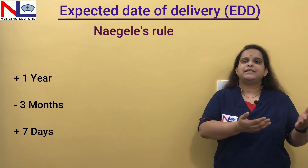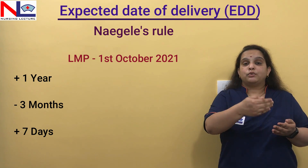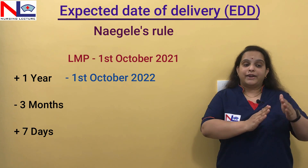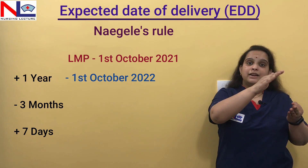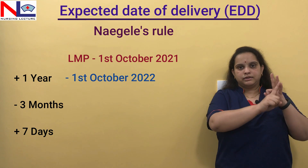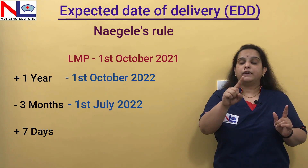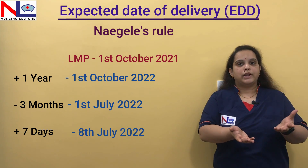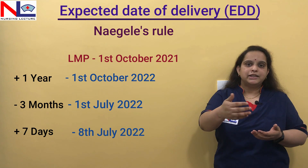Using the same example, LNMP is 1st October 2021. Add one year to get 1st October 2022. Then subtract three months by counting backwards — October, September, August, July — giving 1st July 2022. Then add seven days to get 8th July 2022. Both methods give the same result, but the easier method is simply adding nine months and seven days forward.